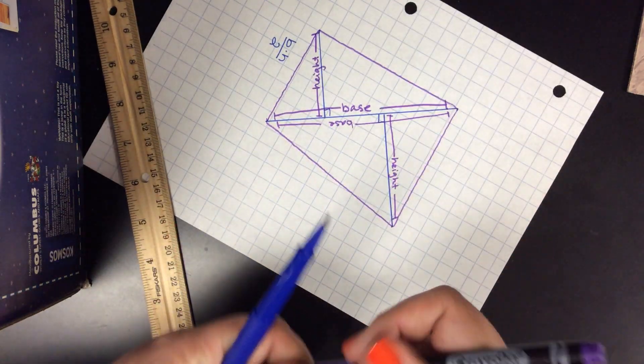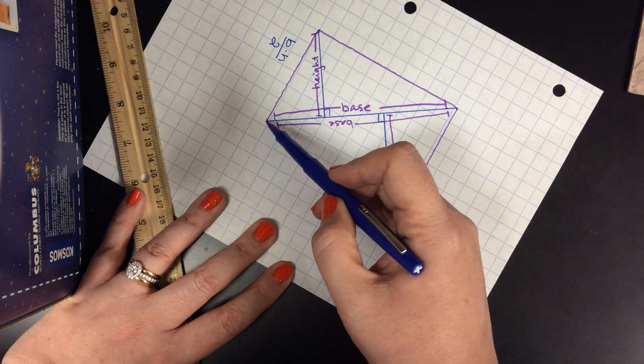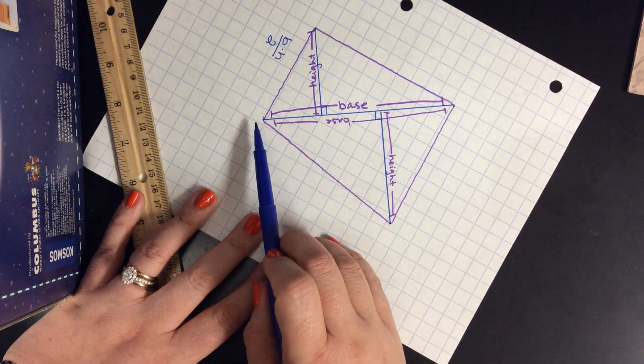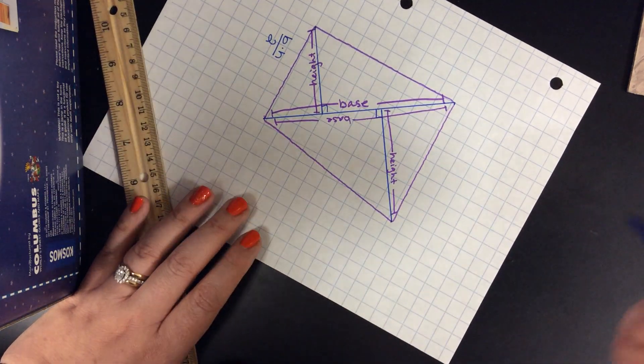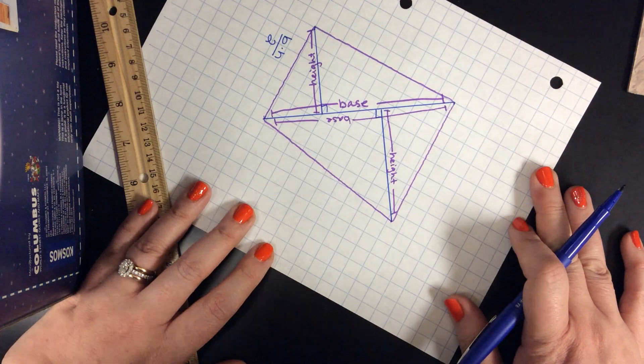So now that I have those, I can calculate the area of triangle one and I can calculate the area of triangle two, and then I just add them together to find the area of the entire piece as a whole.